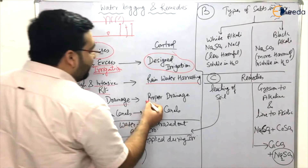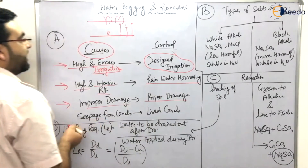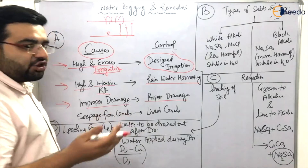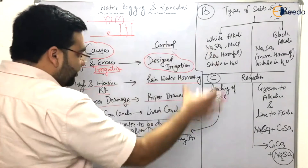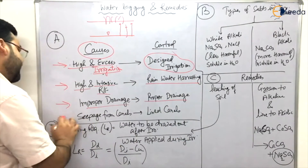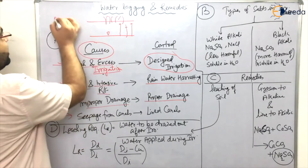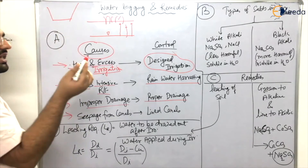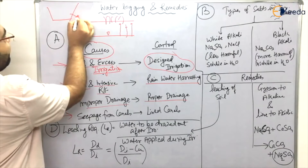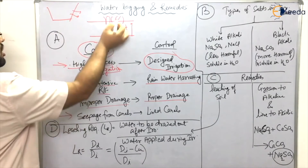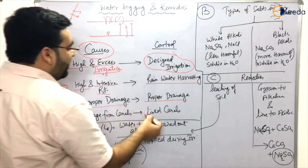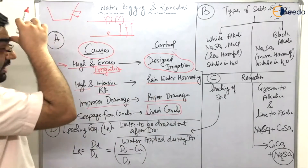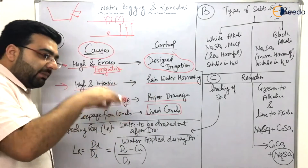The third cause is improper drainage — if your field has improper drainage, water logging can occur. This can be remedied by providing proper drainage. Another cause is seepage from canals. Canals are of two types: lined and unlined. In the case of unlined canals, seepage can cause water logging, and this can be remedied by using lined canals.